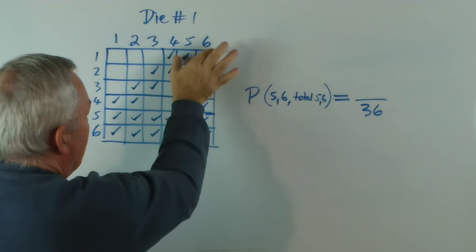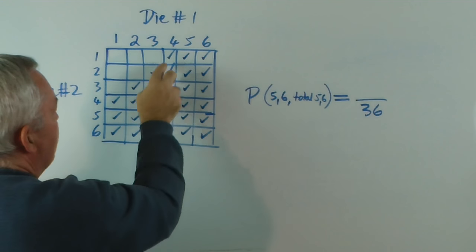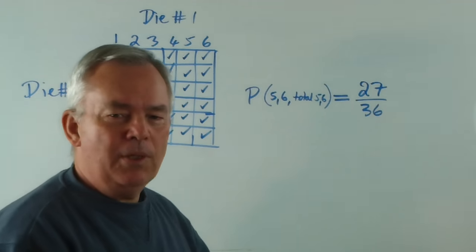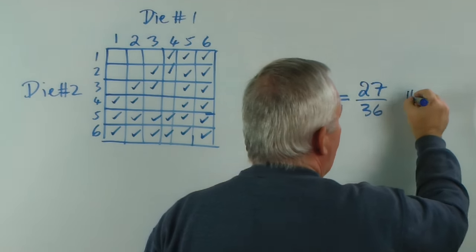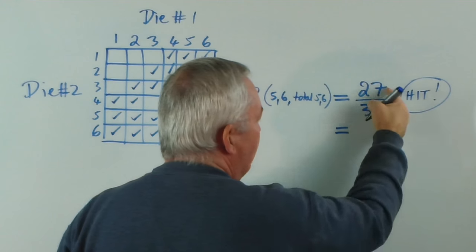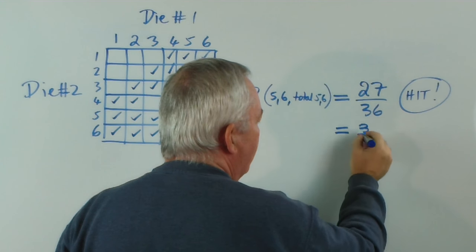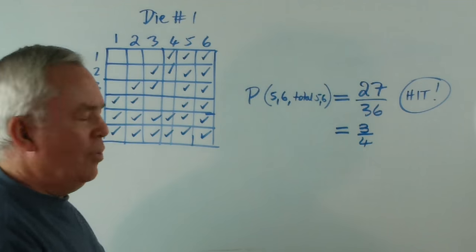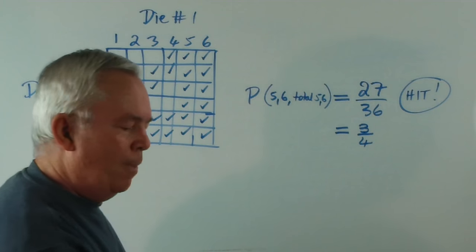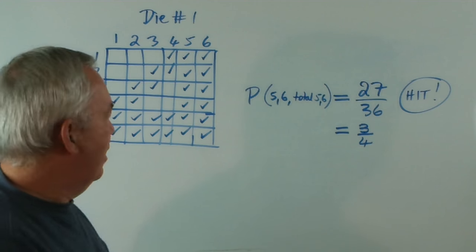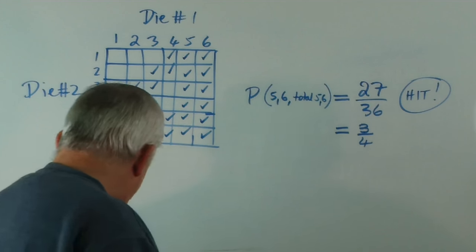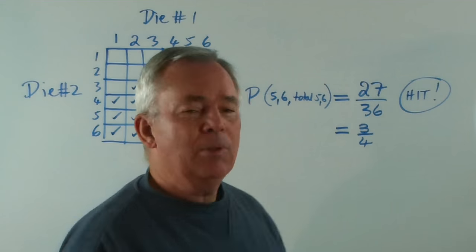Now, we've already calculated there were twenty of these. Twenty-two, twenty-four, twenty-six, twenty-seven. There are twenty-seven possible combinations that we would consider a hit. And since both of these are divisible by nine, you can see that the probability is three quarters. So, three quarters of the rolls that we give would pop up being a six or a five, or totalling a six or a five.